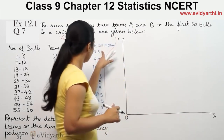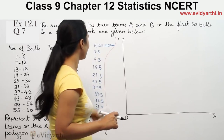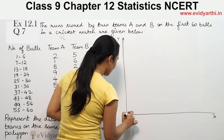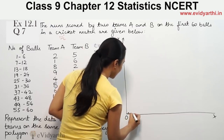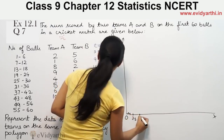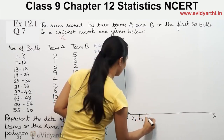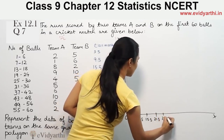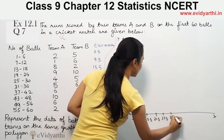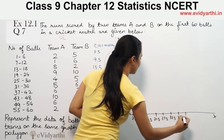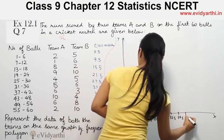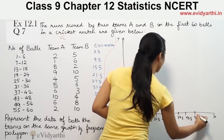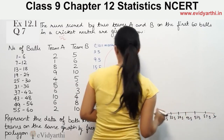On the x-axis we mark the class marks starting from 3.5, then 9.5, then 15.5, then 21.5, then 27.5, 33.5, 39.5, 45.5, 51.5, and 57.5.